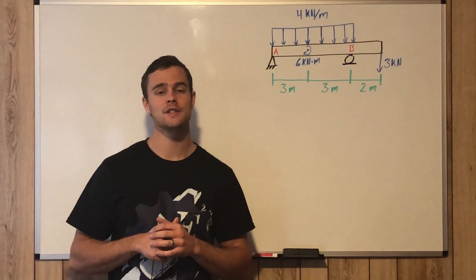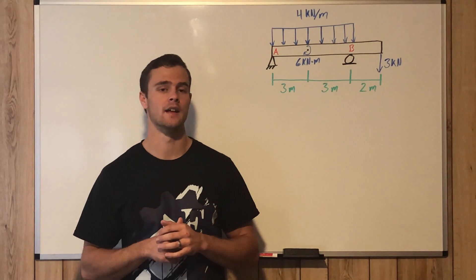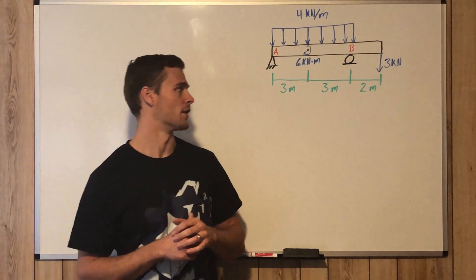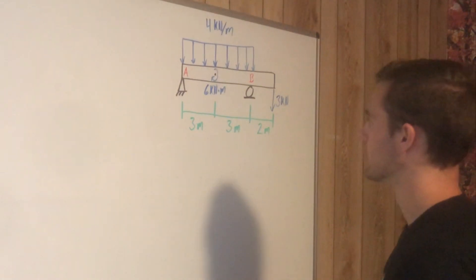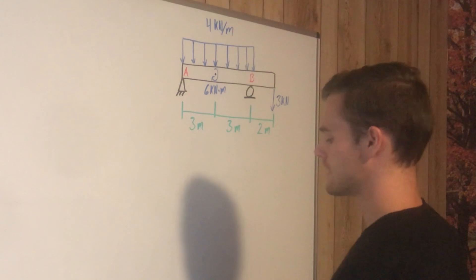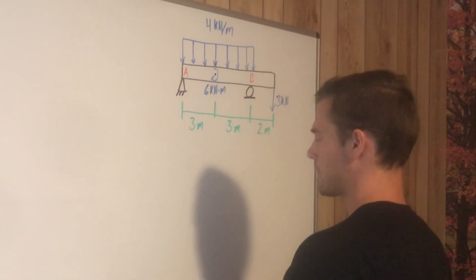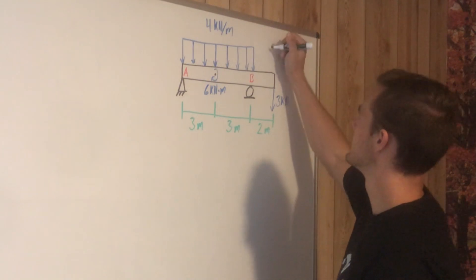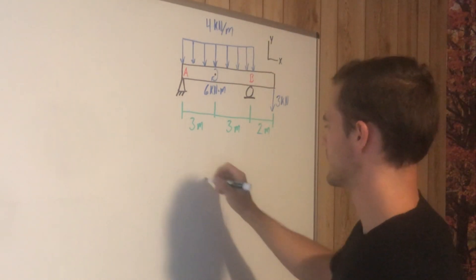The first thing we need to do, like always in drawing shear and moment diagrams, is solve for the reaction forces. We can solve moments about point A to find force B. We are going to say that this is our x-direction and this is our y-direction.